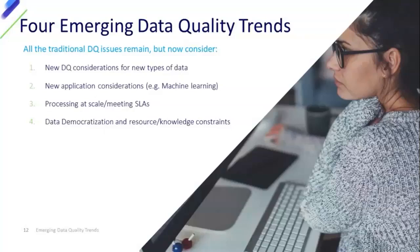The first trend is simply new types of data which have differing qualities we need to think about. We have new application considerations, particularly around machine learning and AI-related components. Third is processing at scale — meeting service-level agreements and handling the volumes of data we're now seeing. And the fourth trend is the whole aspect of data democratization, data literacy, and the resource and knowledge constraints around how we're thinking about data from a data quality perspective.